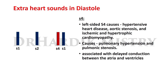Left-sided causes of S4 include hypertensive heart disease, aortic stenosis, ischemic and hypertrophic cardiomyopathy. Other causes include pulmonary hypertension and pulmonic stenosis. S4 is also associated with delayed conduction between the atria and ventricles.